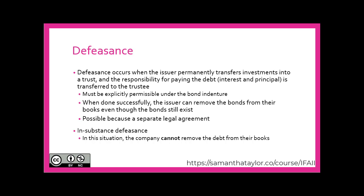Only in instances of legal defeasance may we remove the bond liability from our books. If there is in-substance defeasance, meaning we've essentially paid a third party to pay back the original investor, that would be referred to as in-substance defeasance. There is no legal agreement and therefore no explicit permission in this bond to do so. In this situation, the company issuing the bond cannot remove the debt from their books.